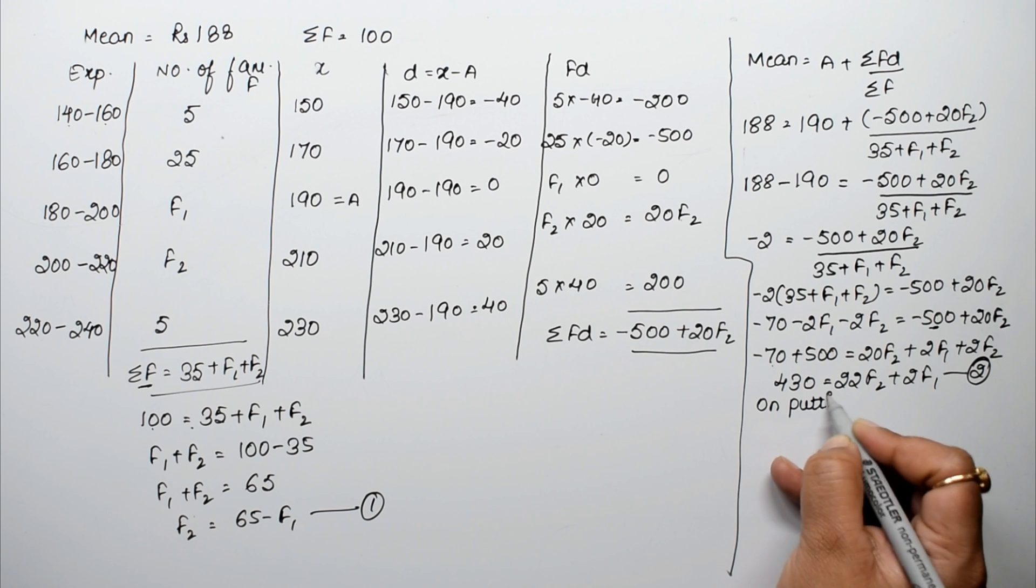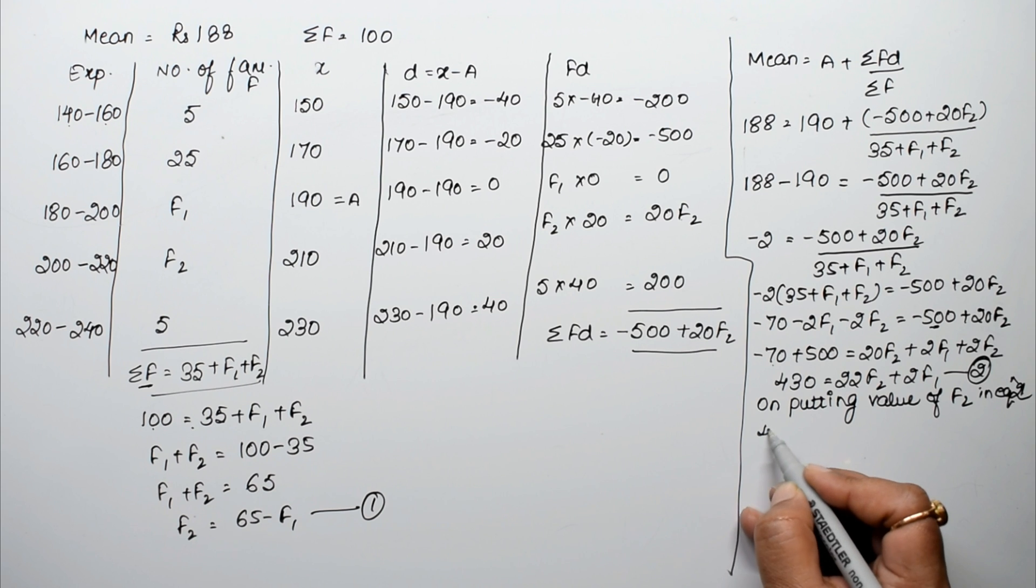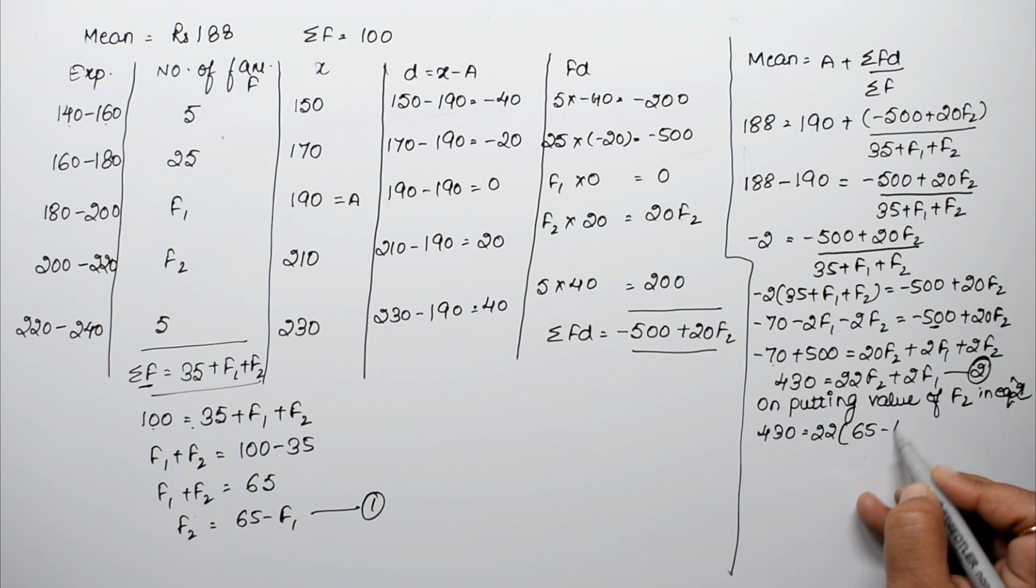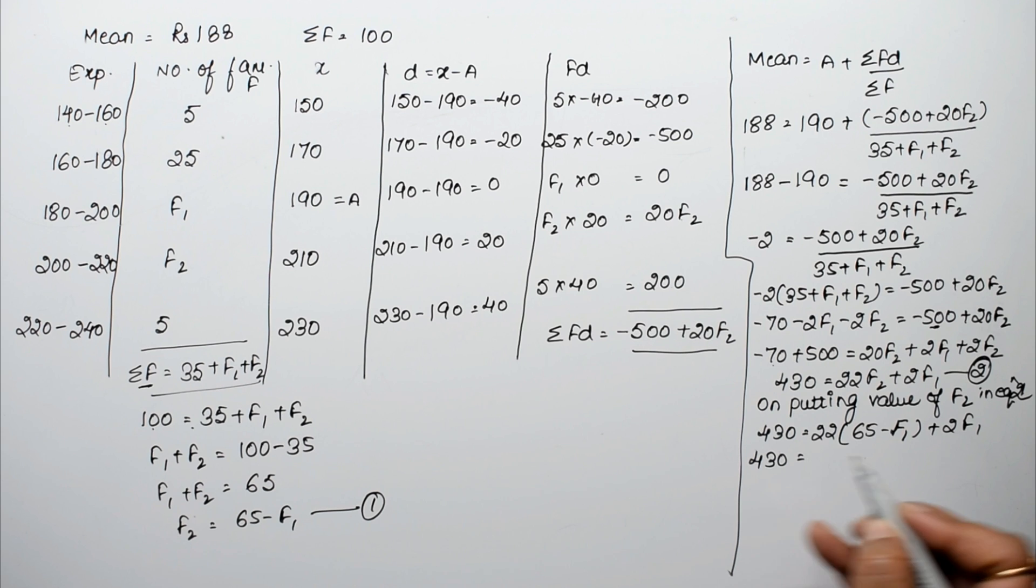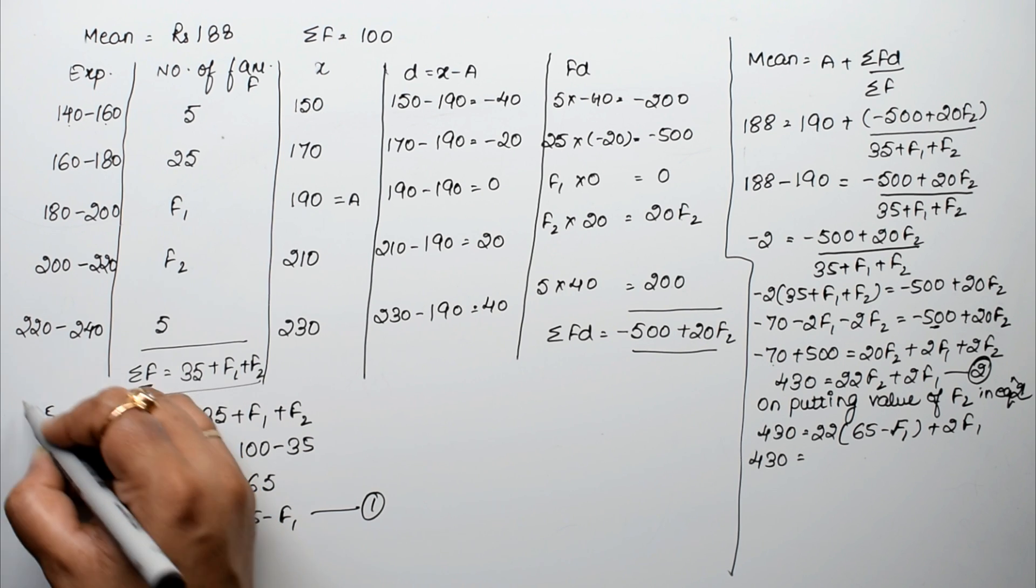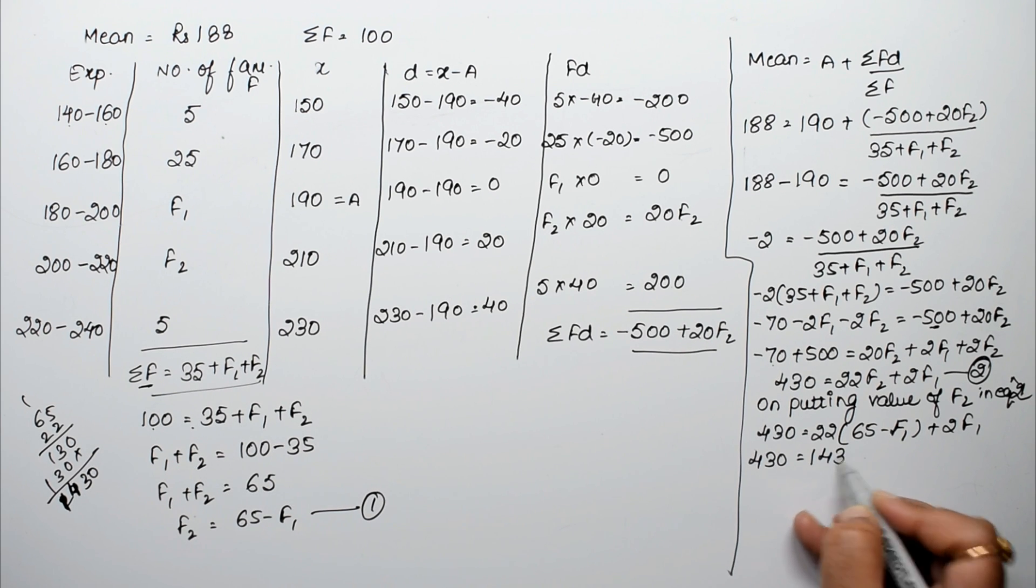From F1 plus F2 equals 65, we get F2 equals 65 minus F1. This is our second equation. Putting the value of F2 in equation 1, we get 430 equals 22(65 minus F1) plus 2F1. So 430 equals 1430 minus 22F1 plus 2F1.